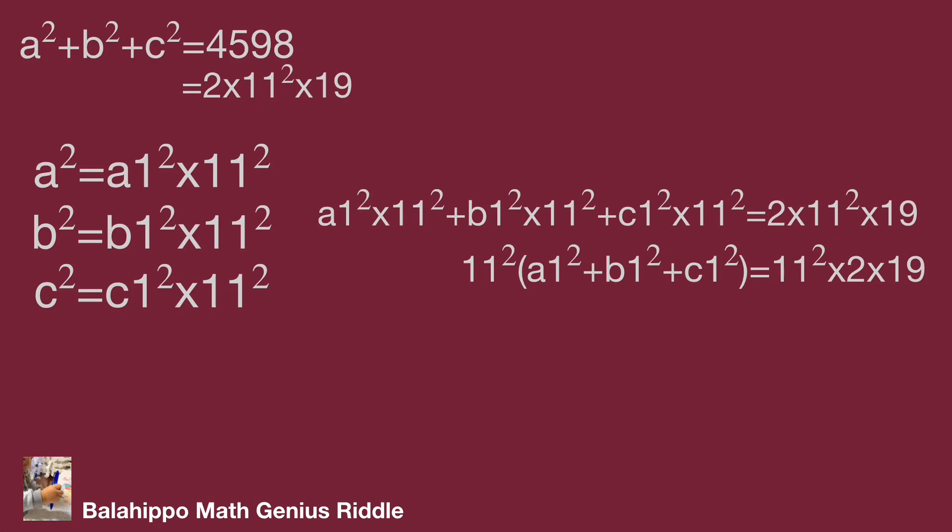Then eliminate 11² both sides. The equation is a1² + b1² + c1² equal to 38.